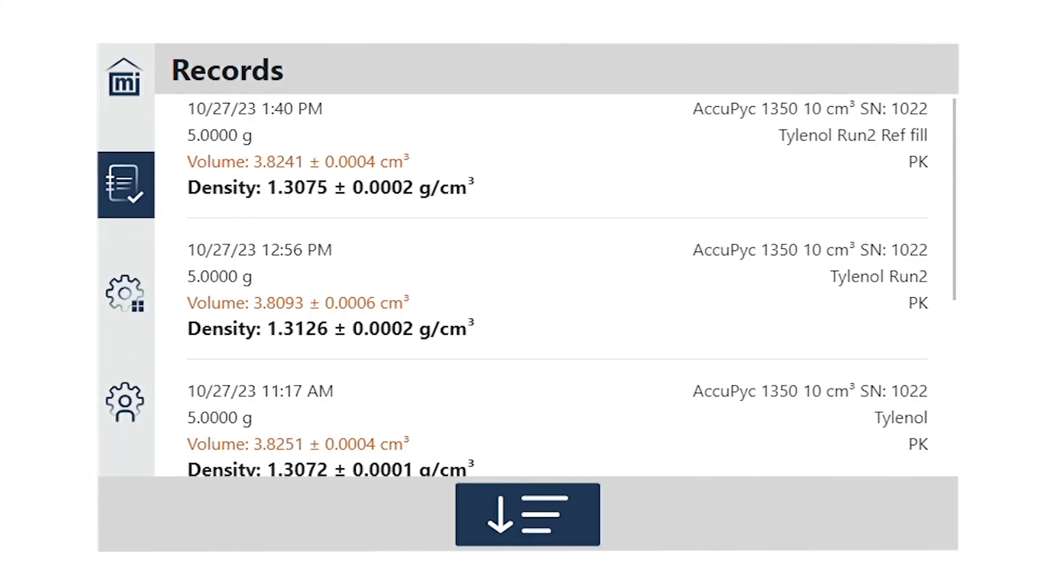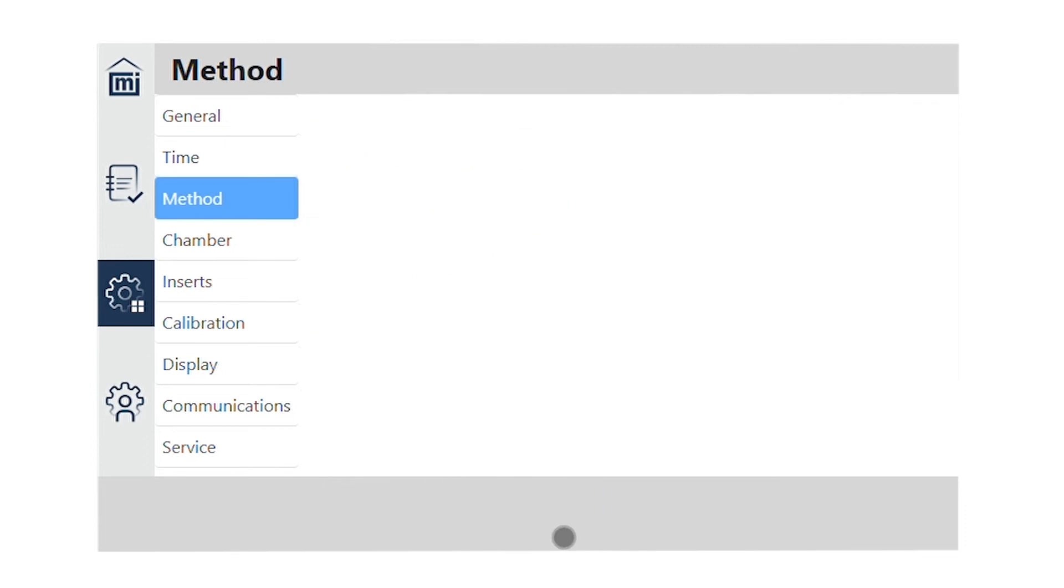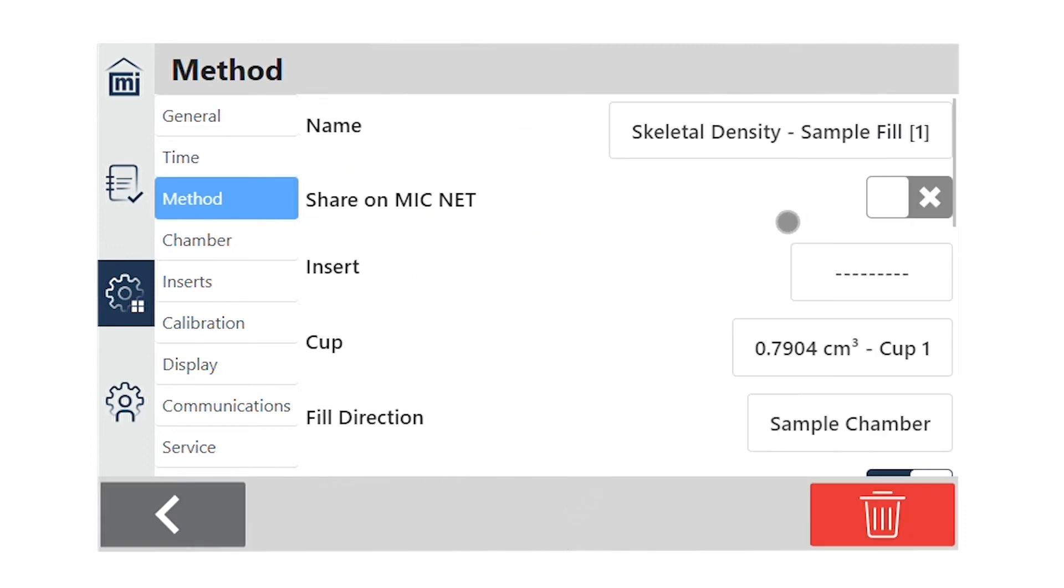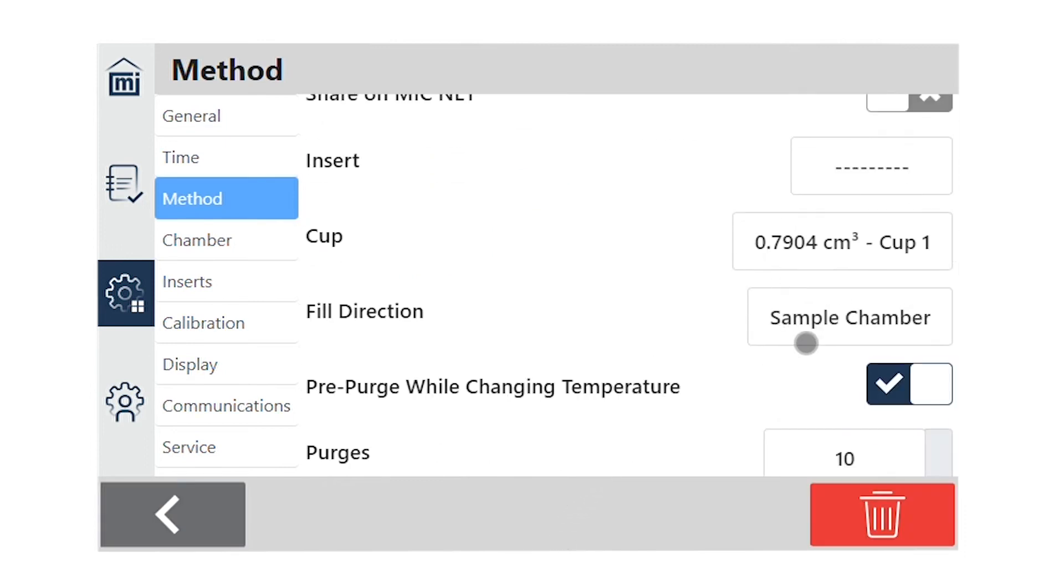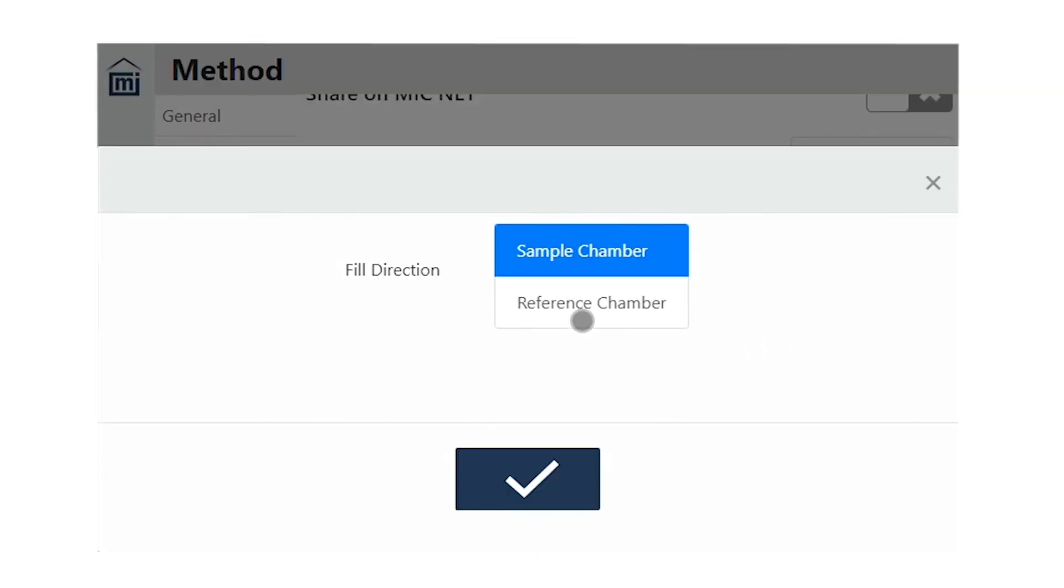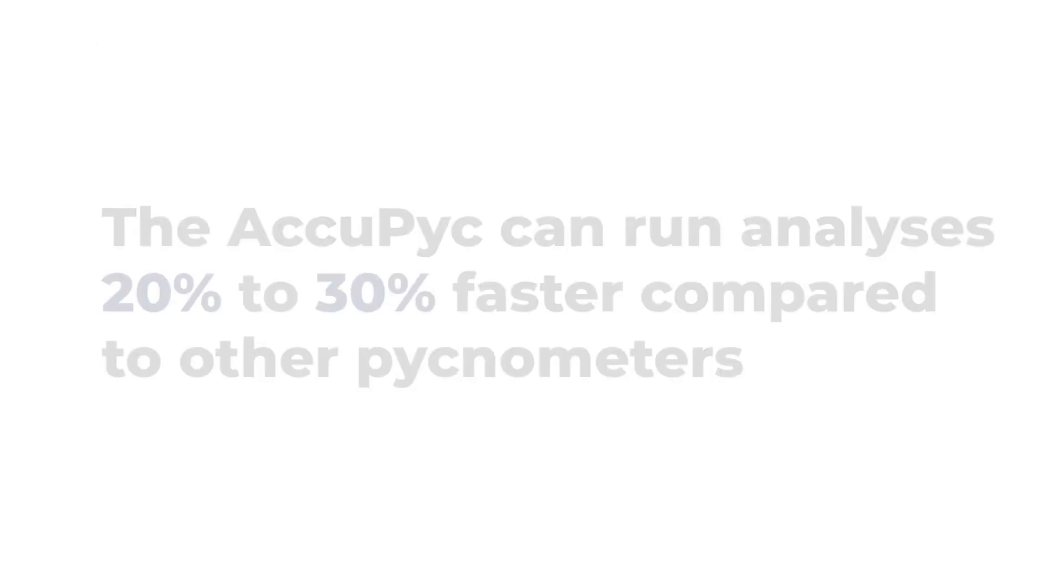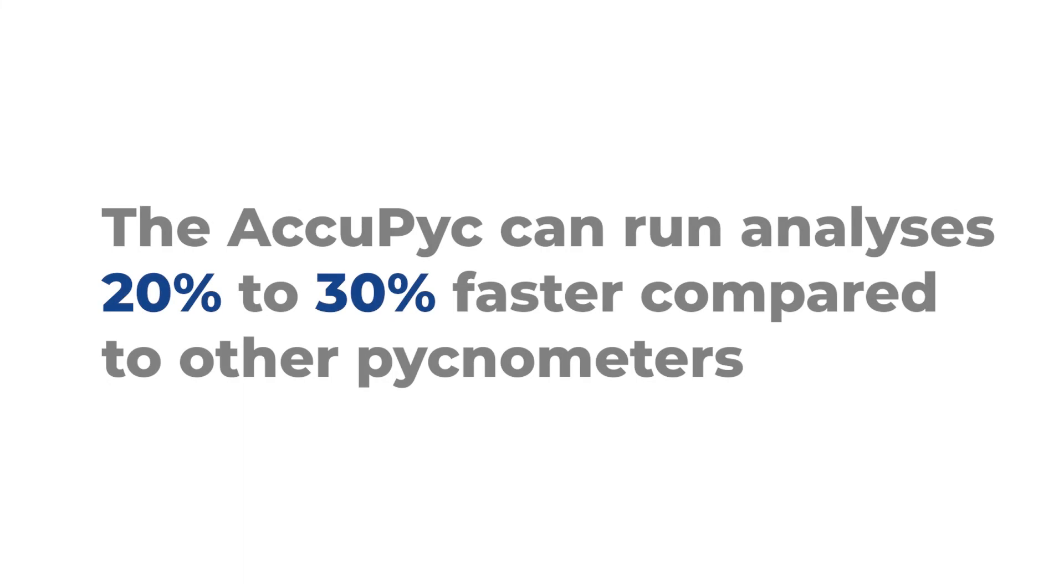The AccuPIC lets you create stored methods so you can save your test settings. Here we can define all the analysis conditions, including the fill direction. This increased temperature stability allows the AccuPIC to achieve up to 20-30% faster analysis times than other pycnometers.